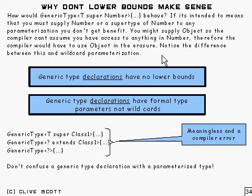Notice the difference here between this and wildcard parameterisation. Because here you're dealing with the internals of the type, and it's rather restrictive as a result.